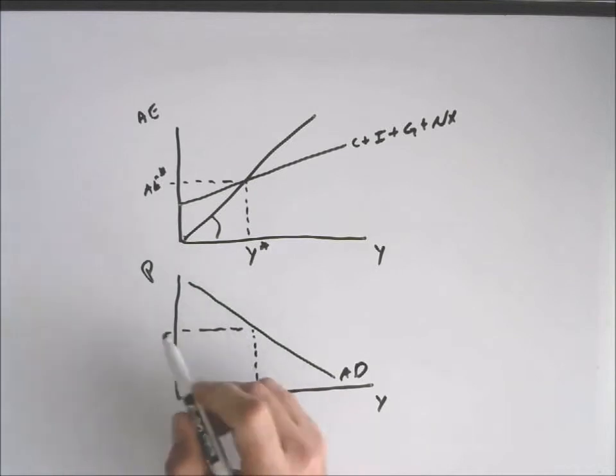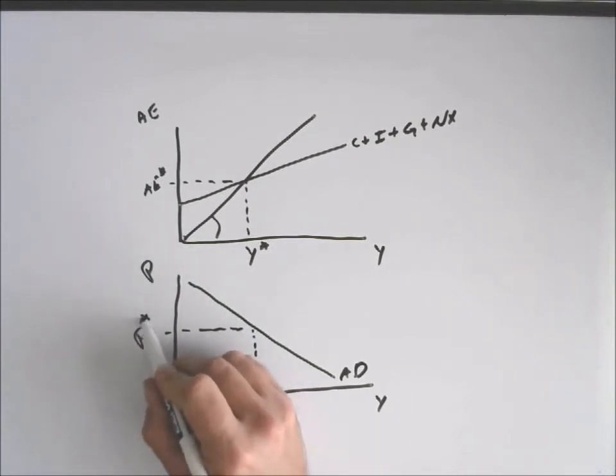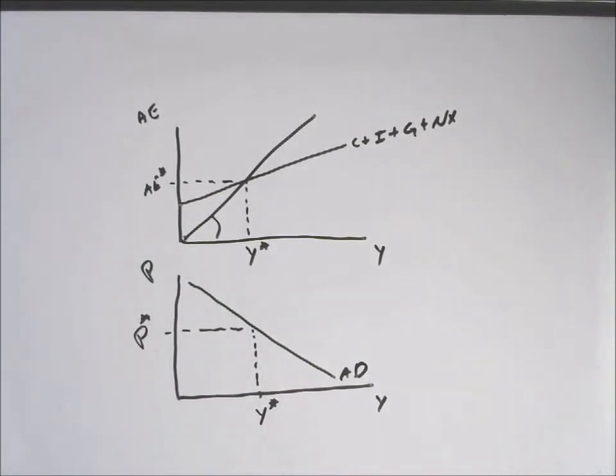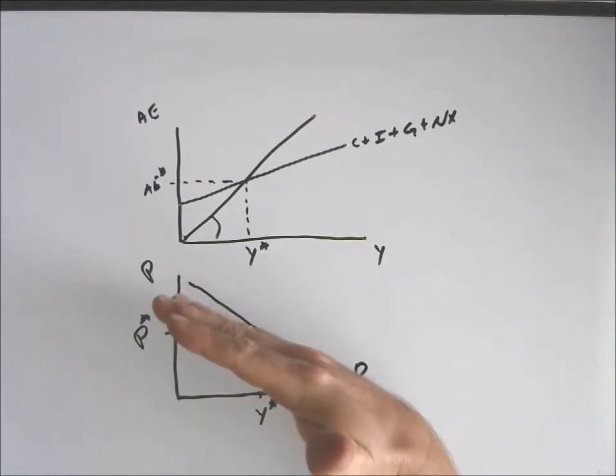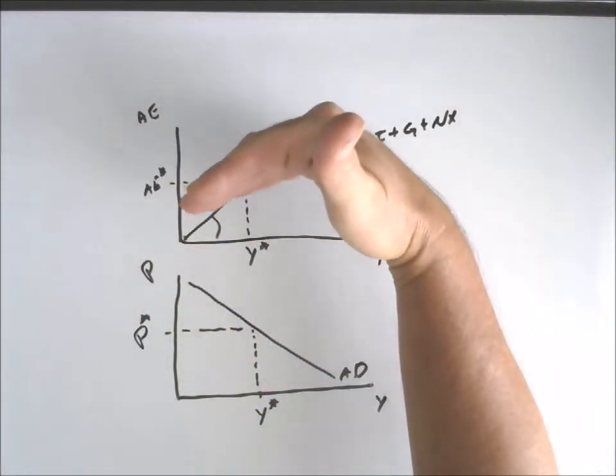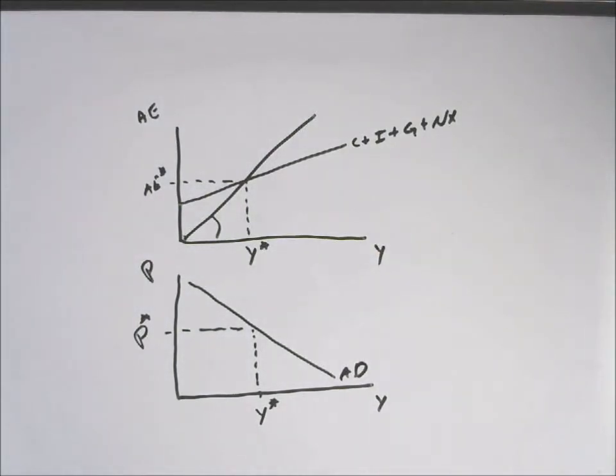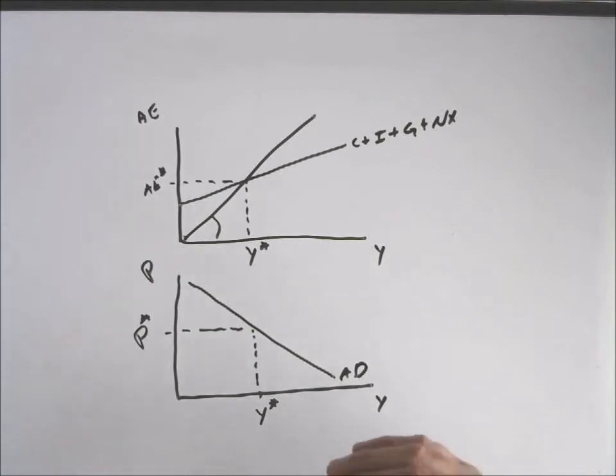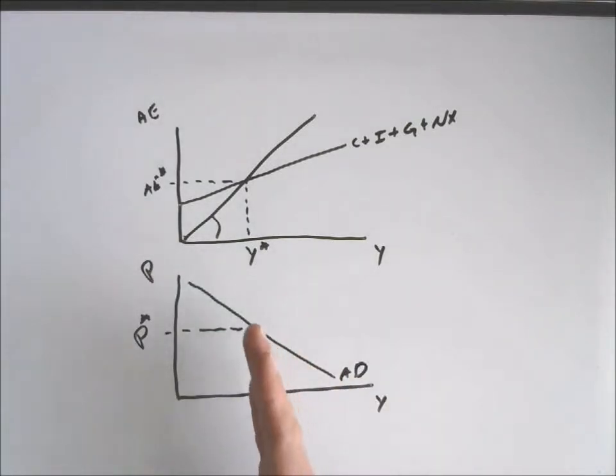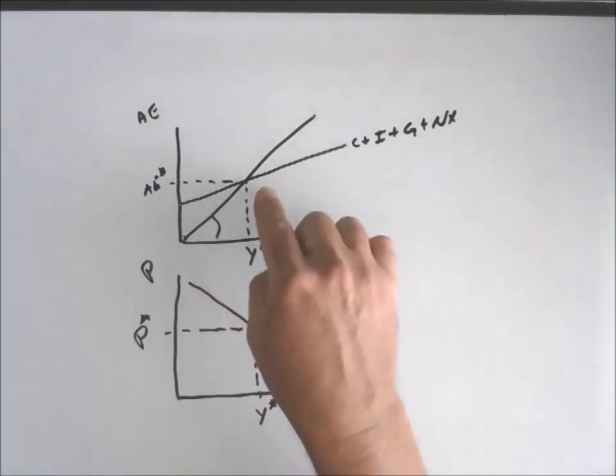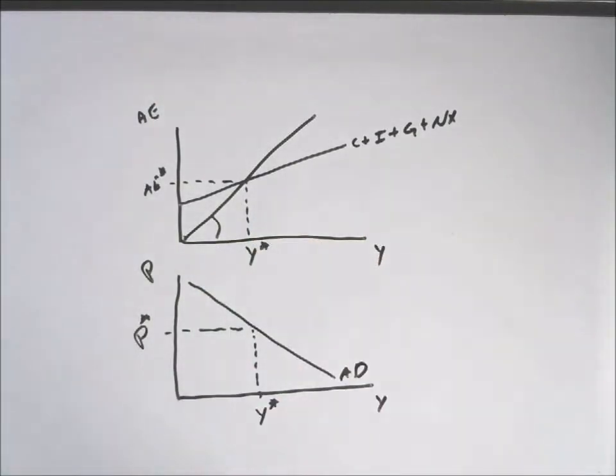And at some level of real GDP there is some price level. Now, how do we derive the demand curve using the aggregate expenditures model? Well, if an increase in prices reduces real GDP, how do we map that up here? An increase in prices...